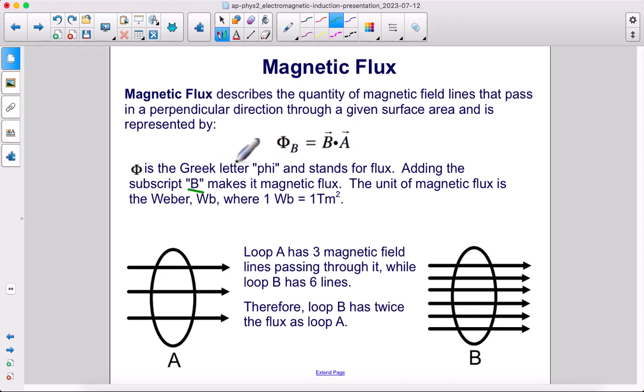Phi is the Greek letter phi and it stands for flux. Adding the subscript B here makes it magnetic flux. The unit of magnetic flux is the Weber, also known as Wb, where one Weber equals one tesla meter squared.